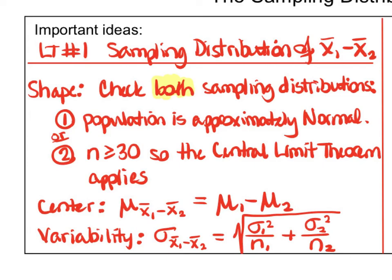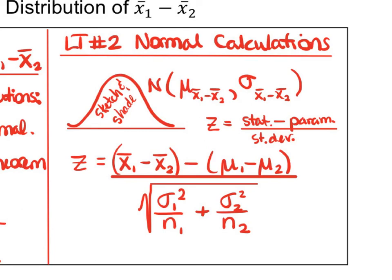Learning target two is all about normal calculations. Always sketch and shade, showing the mean and standard deviation as the definition of the normal distribution — the shading helps identify left-hand or right-hand probability, which becomes more meaningful in upcoming chapters. Calculate the z-score, then use Table A or normalcdf to calculate the probability. Do not equate the z-score to the probability — they are associated but different. The probability represents the area under the curve, and the z-score is the axis value.